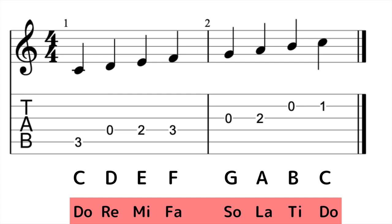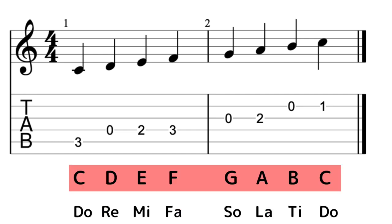Some of you might already be familiar with this system from singing in a choir or from the famous Sound of Music song. It's a useful tool that allows us to understand and communicate pitches and melodies in a more intuitive way. For the guitar, we generally use the alphabetical system rather than the classical do-re-mi system. But it's useful to know both, as it can facilitate communication with other musicians. For this course, though, we'll stick with the alphabetical system.